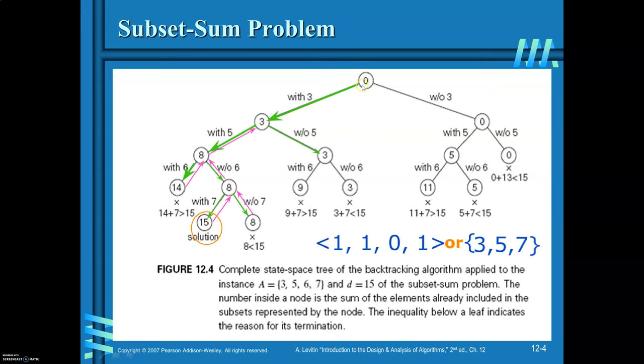Here, in this path, 3 is considered, 5 is considered, 6 is not considered, and 7 is considered. That means the first element is considered (1), second element is considered (1), third element not considered (0), and fourth element is considered (1). So the solution vector is <1, 1, 0, 1>.